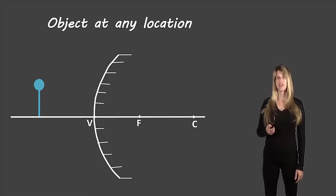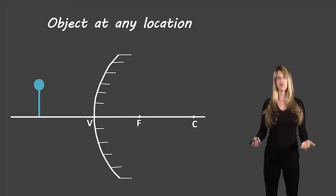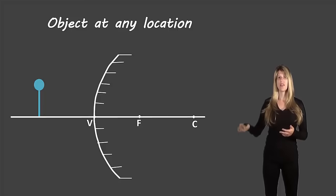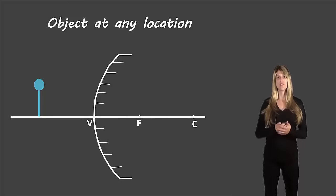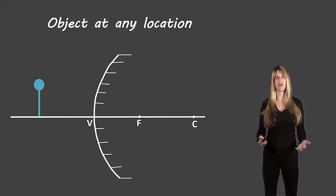Now unlike the concave mirrors there's only one location that the image will be, it will be on the side of the mirror and it won't be anywhere located between F and C or between V and F or at F or any of those locations, it's just going to be in one place on one side of the mirror which means all of our rules will be the same for every single time we draw the diagram.